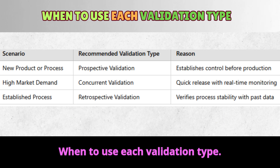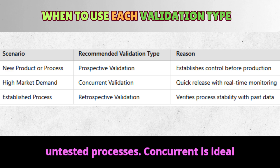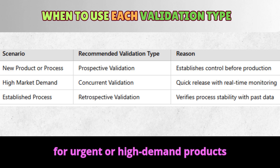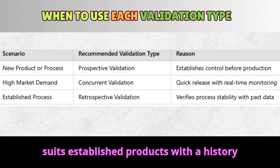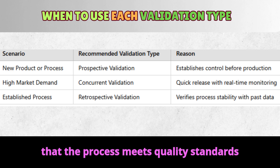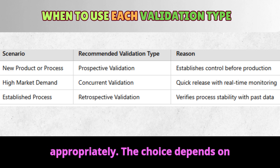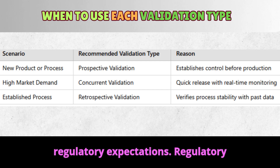When to use each validation type. Prospective is best for new products or untested processes. Concurrent is ideal for urgent or high-demand products needing immediate release. Retrospective suits established products with a history of quality production. Each type ensures that the process meets quality standards appropriately. The choice depends on production goals, market needs, and regulatory expectations.